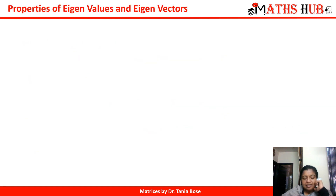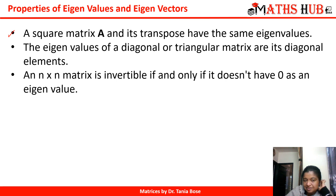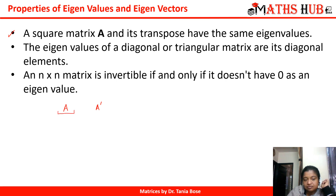The first property says that a square matrix A and its transpose have the same eigenvalues. In the next video you will see how to compute them. So if we have a matrix A and its transpose, both matrices will have the same eigenvalues. In case you know the eigenvalues of matrix A, the eigenvalues of the transpose matrix will be the same as well.